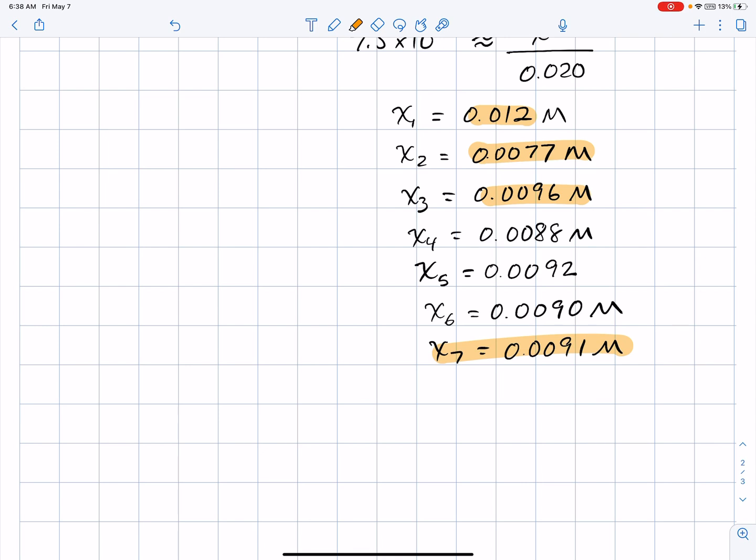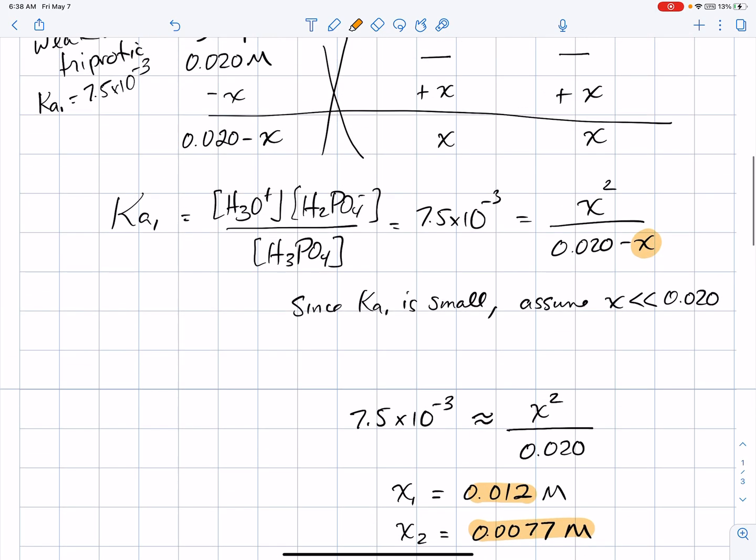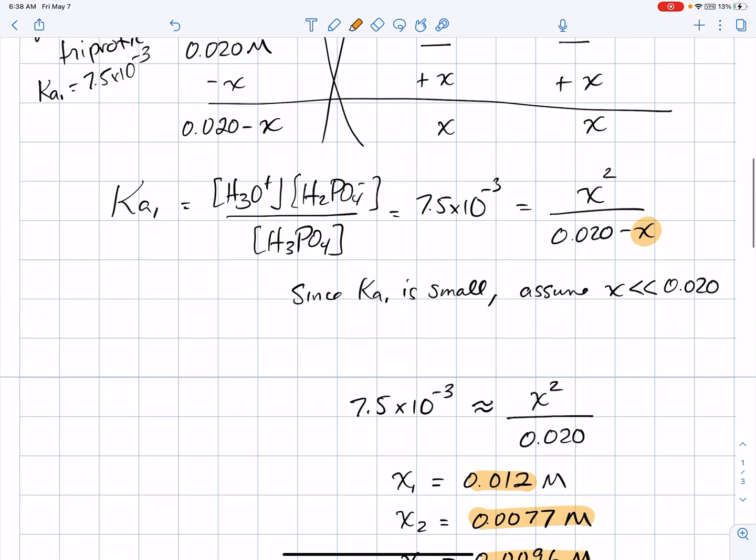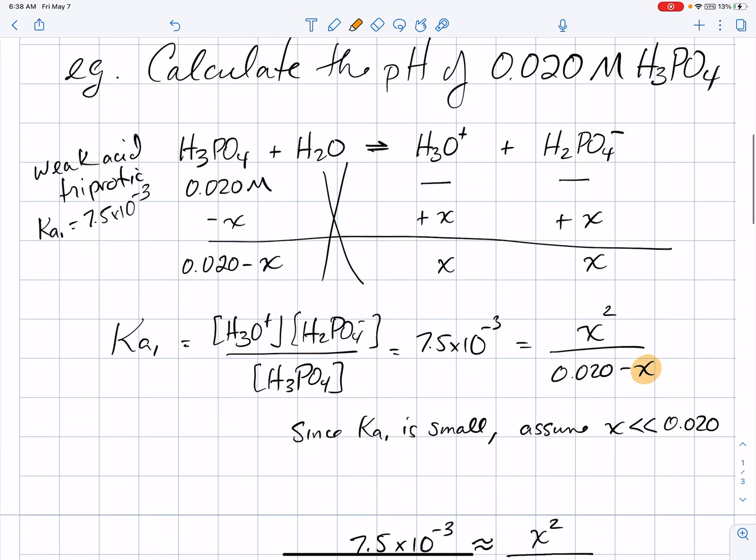It's the answer you should have got if you used the graphing calculator's solver feature. The reason we use the successive approximations method is because otherwise, solving that equation would have meant solving a quadratic equation, which is beyond the ability of many high school students. So, what we want to do now is take a look at the second step.